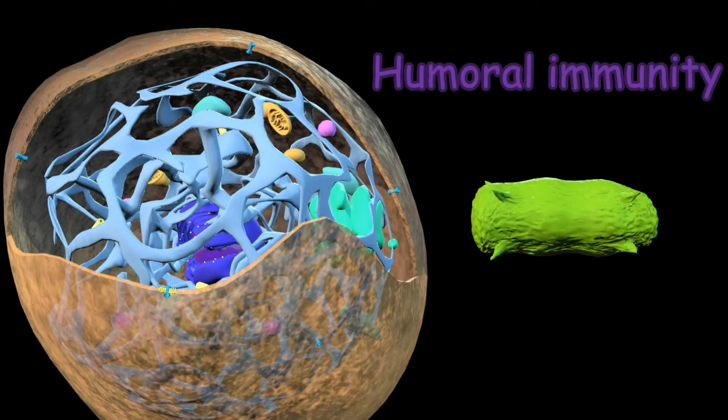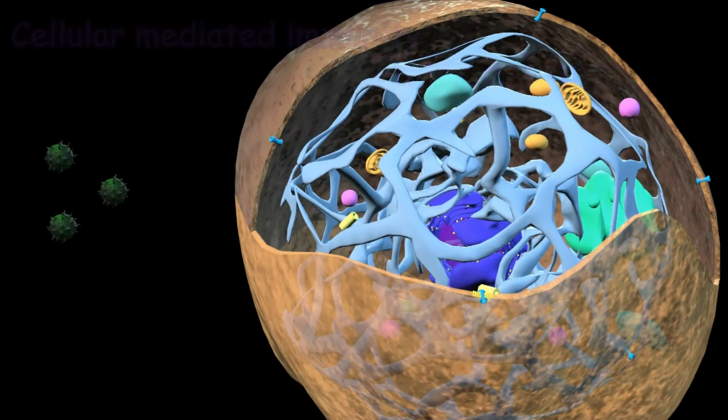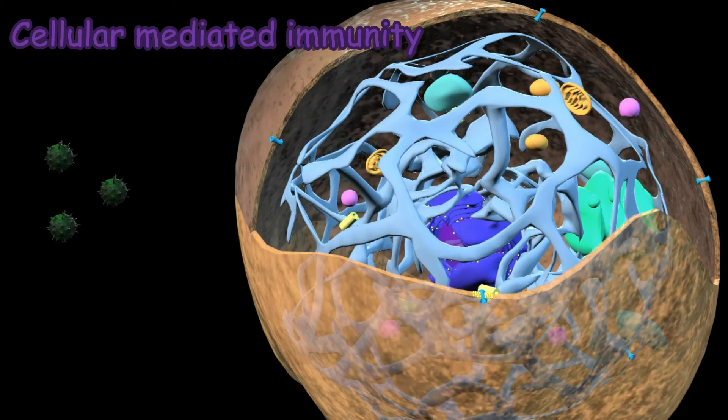Because bacteria and fungi are larger than the body cells and cannot enter the cells, humoral immunity is used. Cellular immune response mechanism is for viruses, because they are smaller than the body cells and can enter the cells.